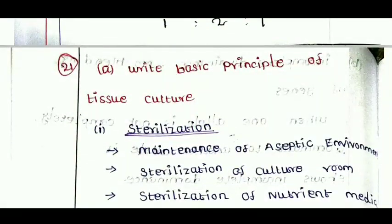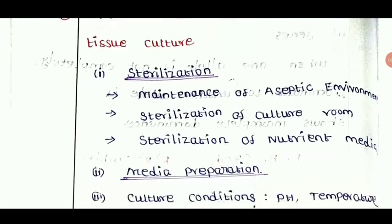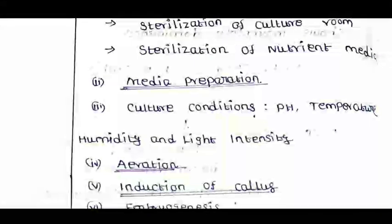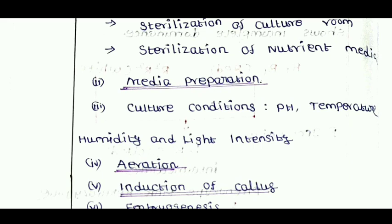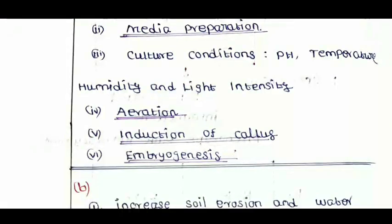The next one is the basic principle of tissue culture. The basic principle of tissue culture is the basic concept. If you use the principle of tissue culture, you will use the elaborated question. We will discuss sterilization: maintenance of aseptic environment, sterilization of culture, sterilization of nutrient media, media preparation, culture conditions — pH, temperature, humidity, light intensity, aeration, induction of callus, embryogenesis. This content you can elaborate and explain. There is a PDF link in the description.